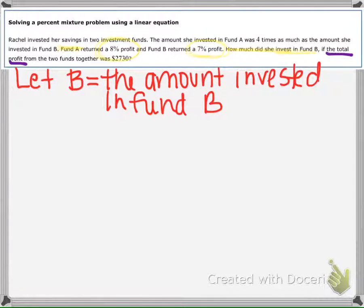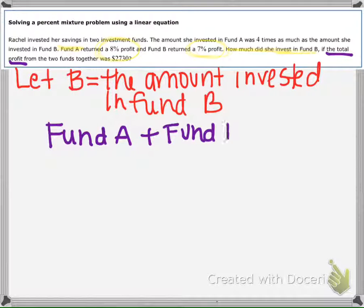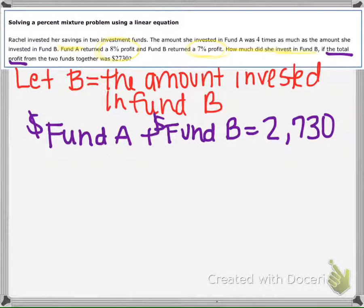Then we're told that the total profit from the two funds together—so Fund A plus Fund B (this is just to help me, not mathematically correct)—the total amount earned from the profit is $2,730.